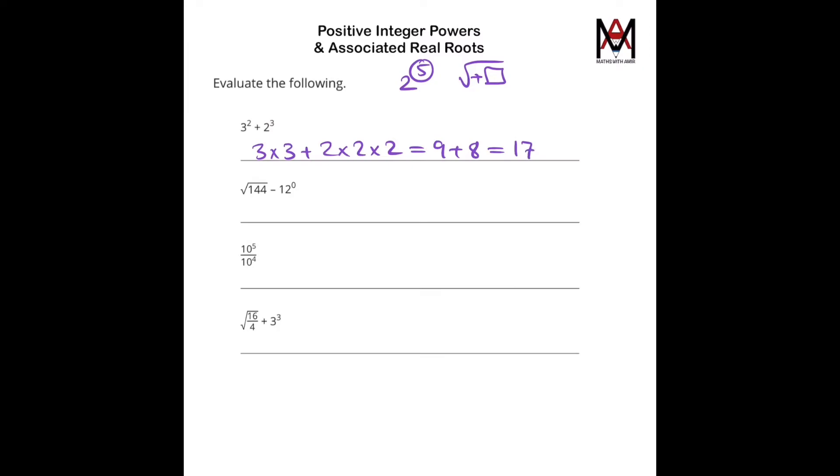Square root of 144, take away 12 to the power of 0, that's going to be 12, take away 1, equals to 11. We know that because 12 squared is 144, so the square root of 144 is simply 12, and 12 to the power of 0, anything to the power of 0, in fact, is always 1.